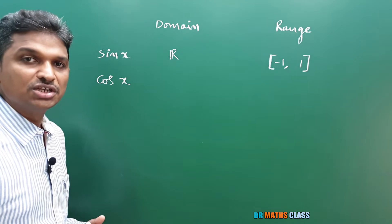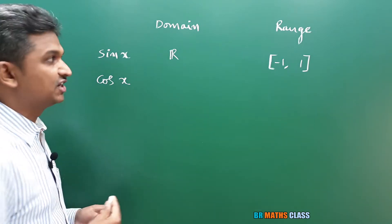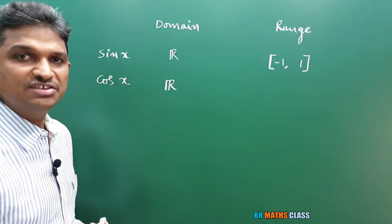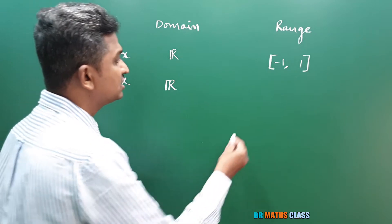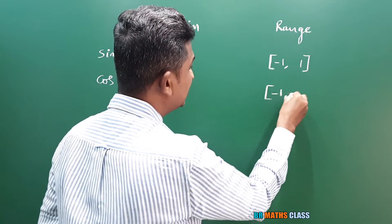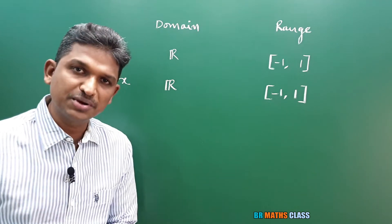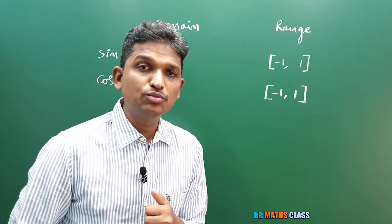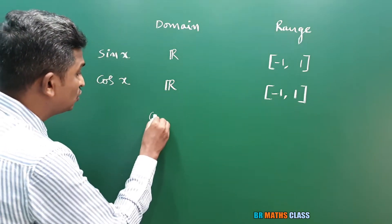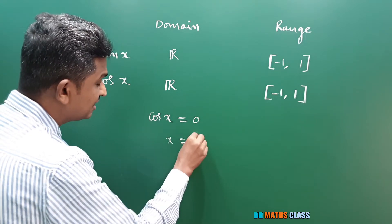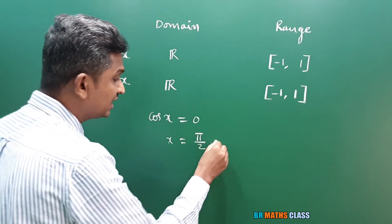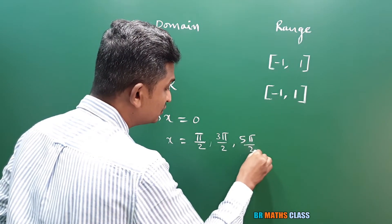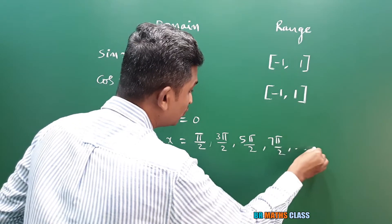Now, cos x function — what is the domain and range? For any real x value, cos x is defined, so the domain of cos x is all real numbers. If you observe the graph of cos x, its values always lie between minus 1 and plus 1, so the range is also the closed interval [−1, 1]. When cos x is 0, what are the x values? x is π/2 — cos(π/2) is 0, cos(3π/2) is 0, cos(5π/2) is 0, cos(7π/2) is 0.